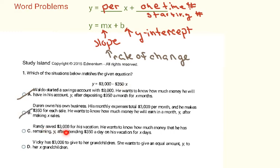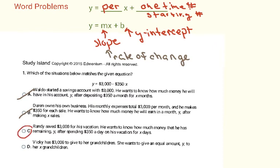Letter C: Randy saved $3000 for his vacation and wants to know how much money he has remaining, y, after spending $350 a day for x days. The 350 per day is the slope number, and he started with $3000. To find how much is left over, you start with 3000 and subtract 350 for each day — which matches our equation. So the answer is C.